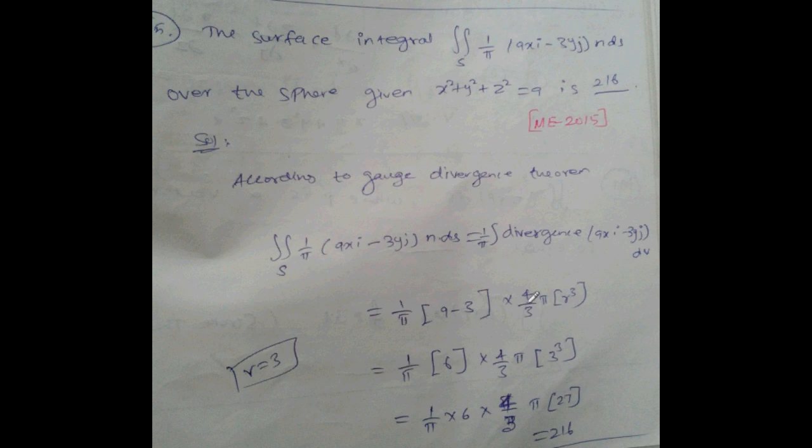So 4 pi over 3, r cubed. r means root of 9 equal to 3. Substitute r equal to 3. 1 divided by 9 into negative 2 into 4 by 3 pi into 3 cubed equals 27, so simplified this is 216. The answer is 216.